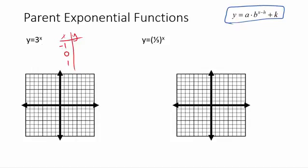Starting with the first value: 3 to the negative 1. Remember that's not negative 3 — that's 1 third. Then 3 to the 0: anything to the 0 power is 1. And 3 to the 1 is just 3. We could keep going — if we plug in 2, 3 squared is 9. We'll stop there. That's a good number of points.